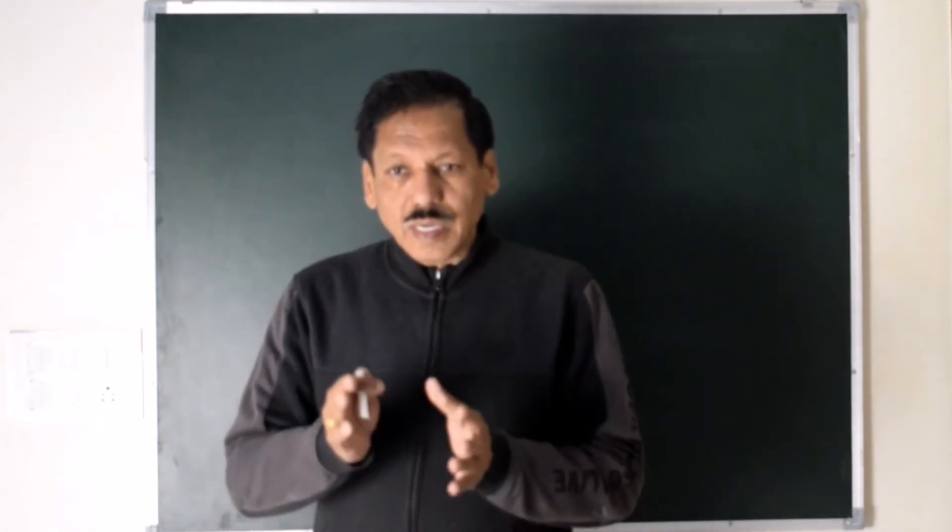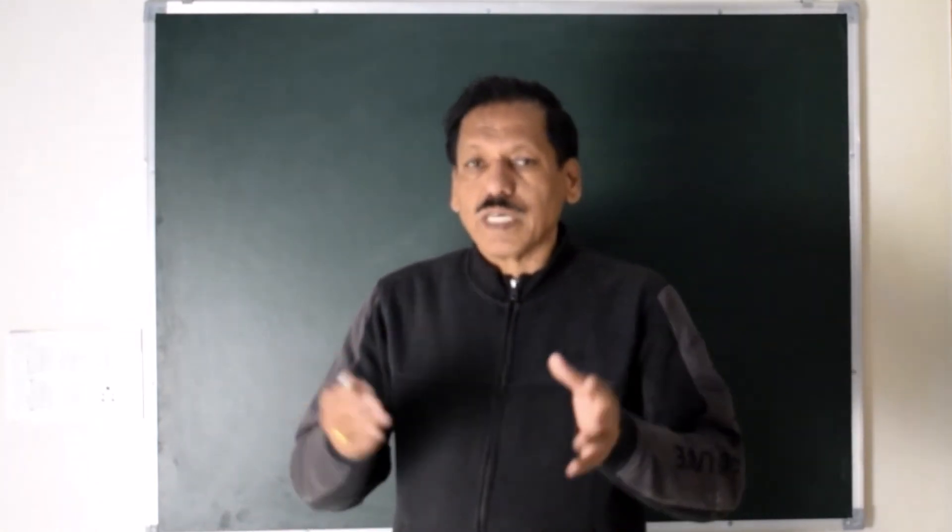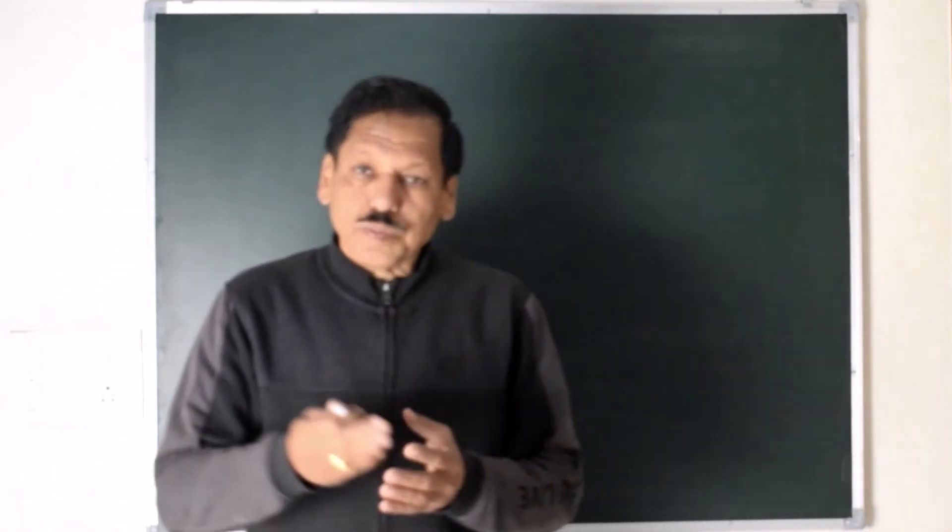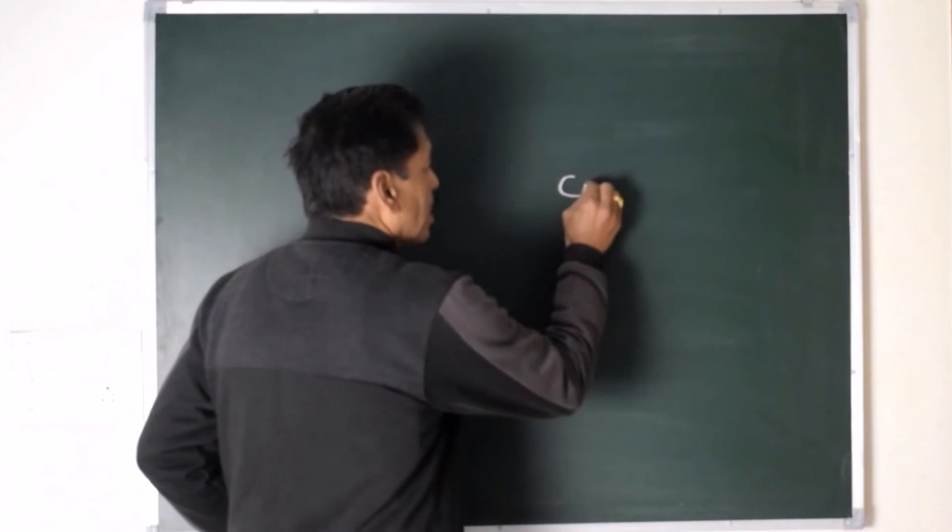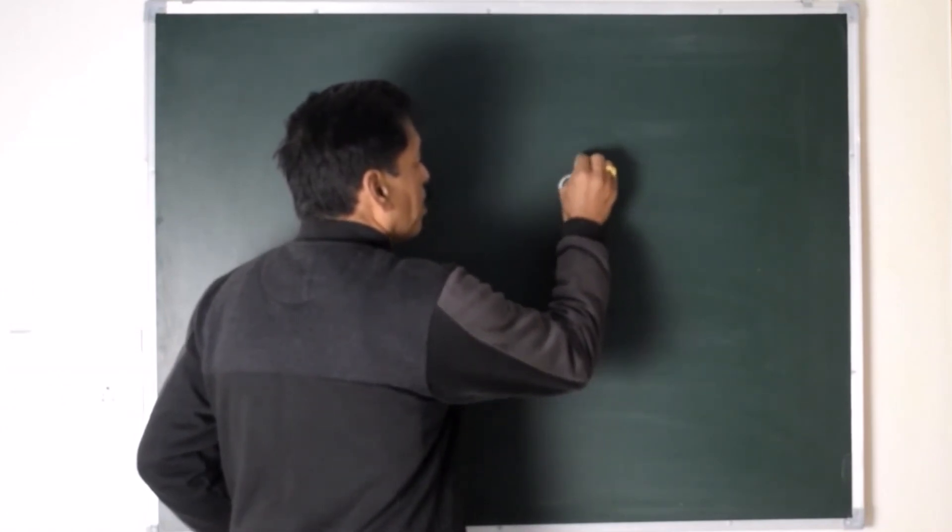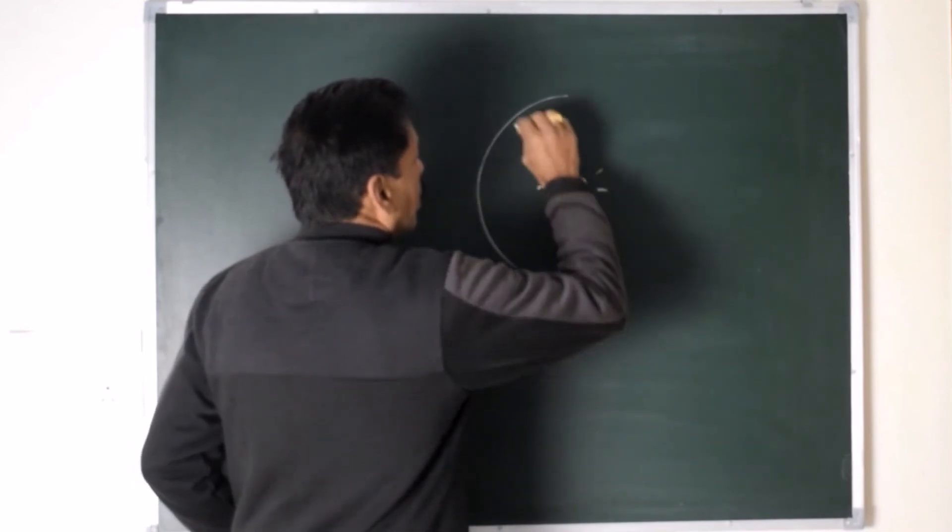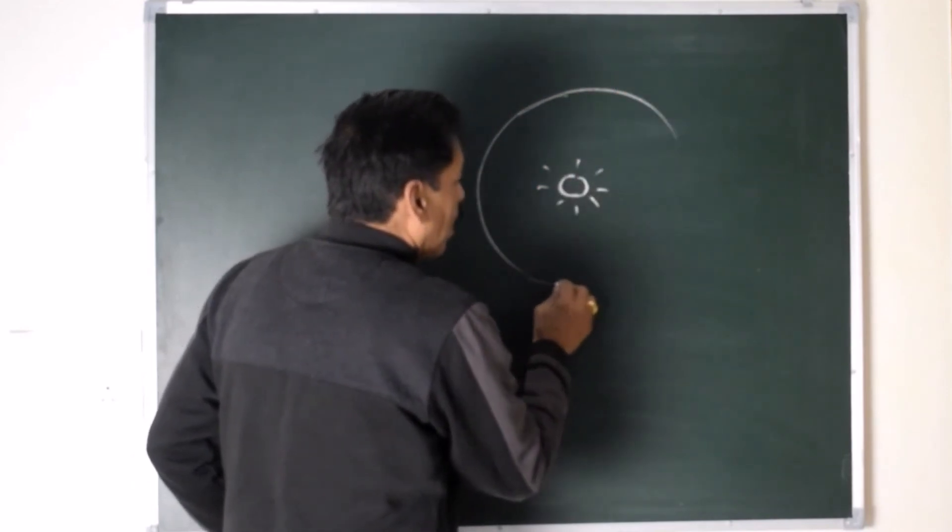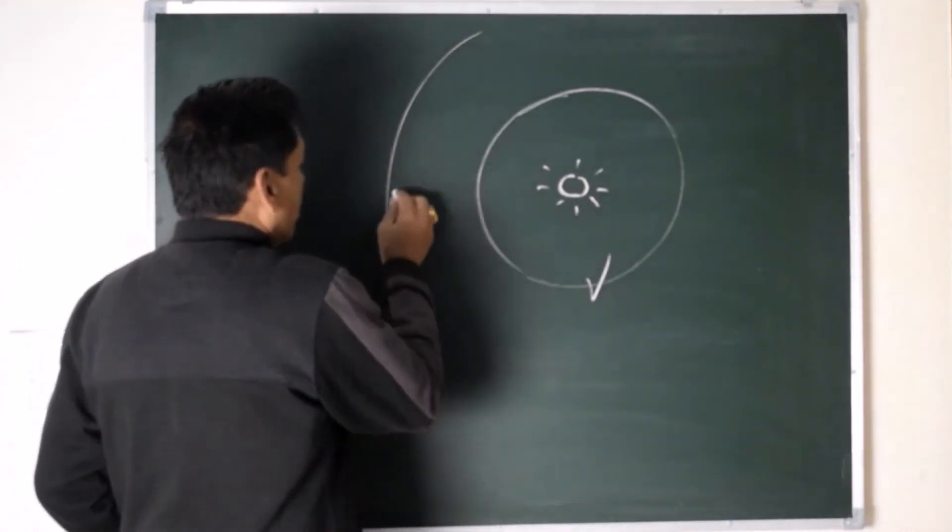Now a few terms we will try to understand with one of the inferior planets. So I can explain it with the help of a diagram. Here is the Sun. This is an inferior planet, say Venus orbit, and this is the Earth's orbit.